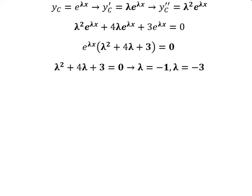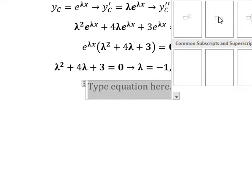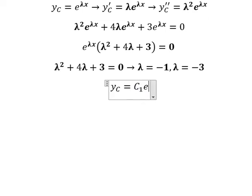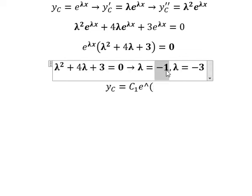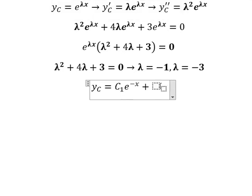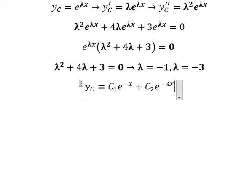So we have yc equals c₁ e to the power of lambda s. We substitute lambda equals negative one to get negative s, giving c₁ e to the power of negative s, and we have c₂ e to the power of negative three s. Now let's go to the particular solution.